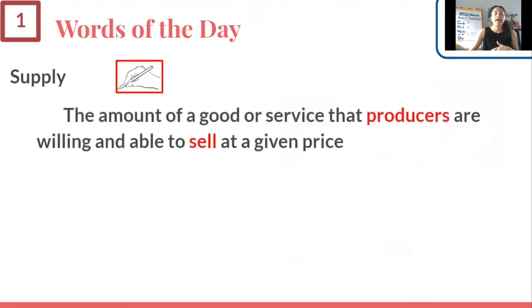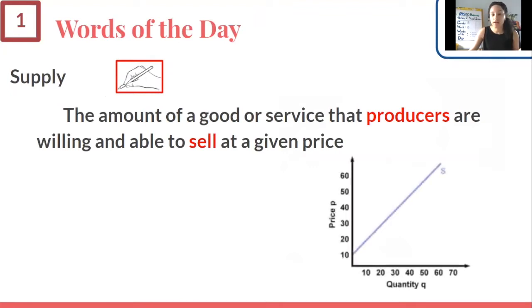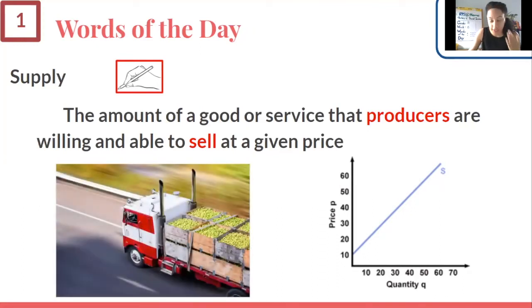Let's write down what supply really is. Supply is the amount of a good or service that producers are willing and able to sell at a given price. That means we're thinking about the production side of things — not you and me going out buying things, but the farmer growing things, the business or factory owner making goods or services. On a chart, supply is always represented by a line moving upwards — a positive slope.